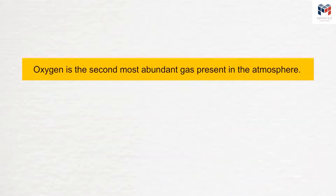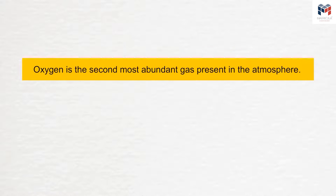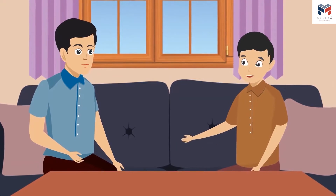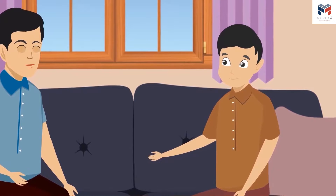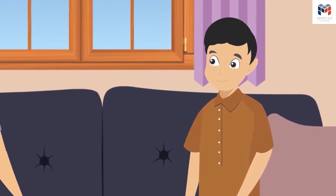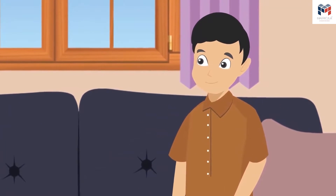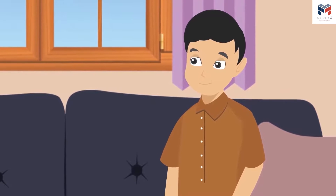I have read that oxygen is the second most abundant gas present in the atmosphere. Nitrogen, which is the most abundant gas present in the air, is a stable gas and does not react easily with other substances, and that's why its quantity is high and stable in the atmosphere. We also suffocate where air pollution is high or where something burns, because many toxic substances also enter our body with the air.